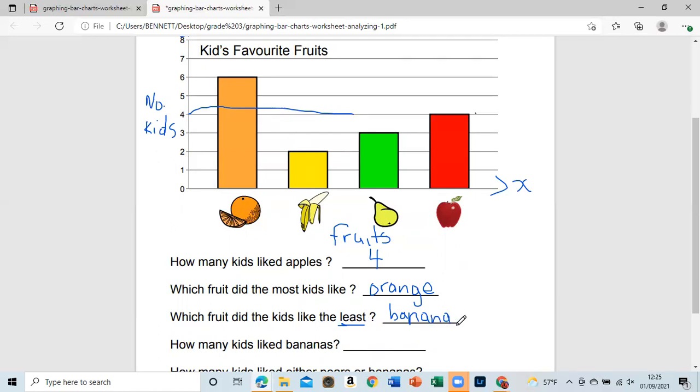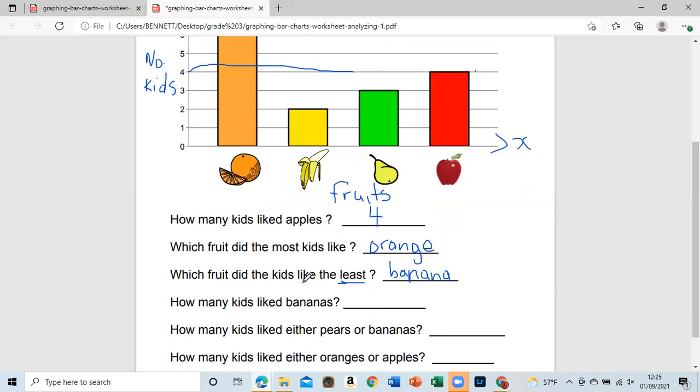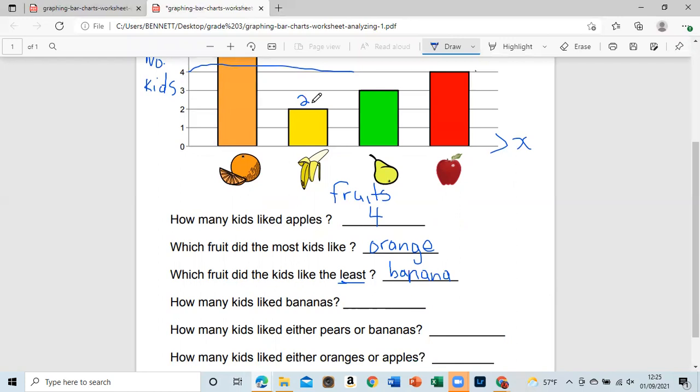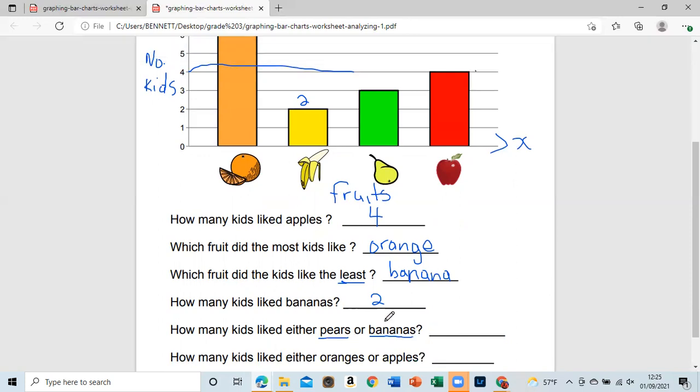This is a very important topic for students. So that's banana, and then it further goes to say how many kids like bananas and that will be two. We'll just go right across. How many kids like either pear or banana? The fact that it's either, it means you have to add both pear and bananas.